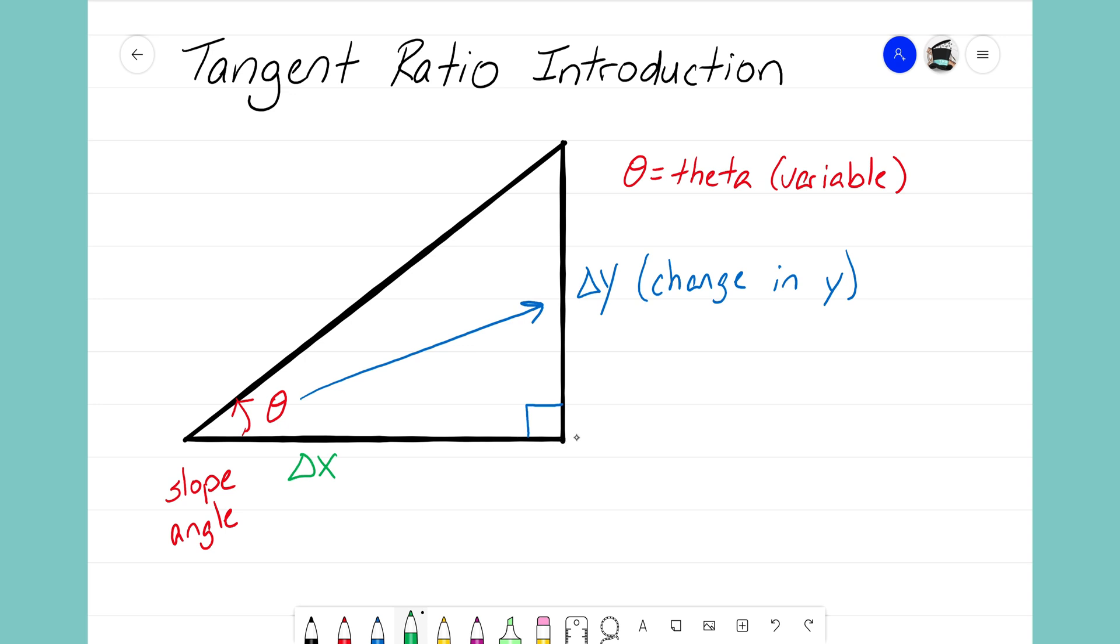That forms this right angle. Delta x refers to the change in x, that is the change in our x direction. So far so good. We're remembering from Algebra 1 that delta y is this vertical side and it's the side that's opposite from our slope angle, and then we have our delta x here which is the side that is next to our slope angle and also creates the 90 degree angle.